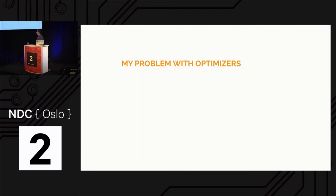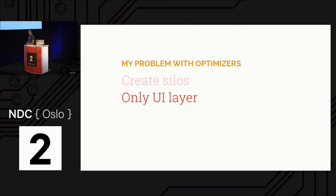There are also optimizer tools — Optimizely, Optimizer, Google has something. They're probably great for their thing, but they have a tendency to create silos. They normally put A/B testing in the hands of the business or content creators, not developers. And normally they are only UI-layered — you can only use them for changing the UI. You want to be able to change algorithms behind the scenes too. You can use them as an easy way to start, but if you're going to do this the right way, don't start there.